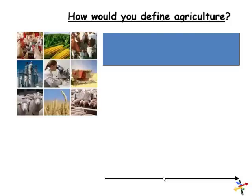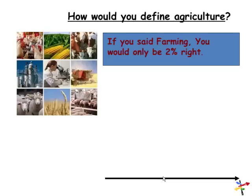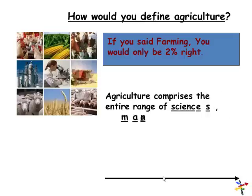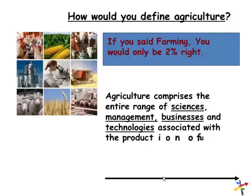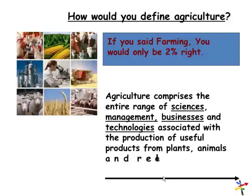If you were asked to define agriculture, many would say farming, and you'd only be 2% right. Because only 2% of the agriculture industry deals with farming. What we often forget is that there are many different fields in agriculture.